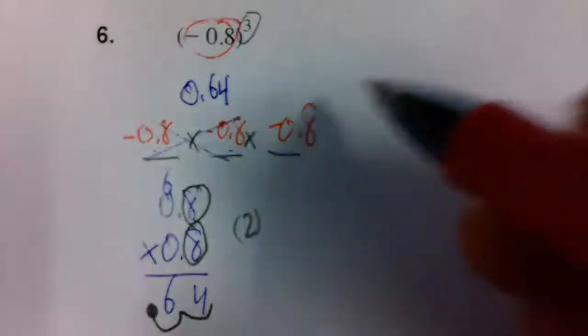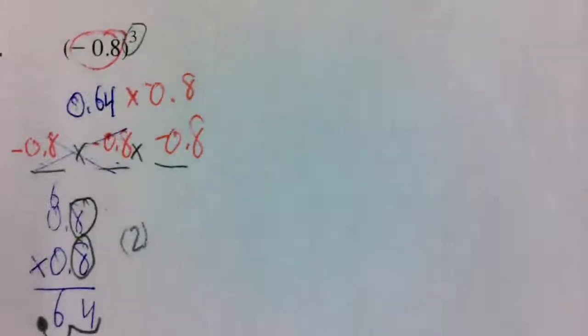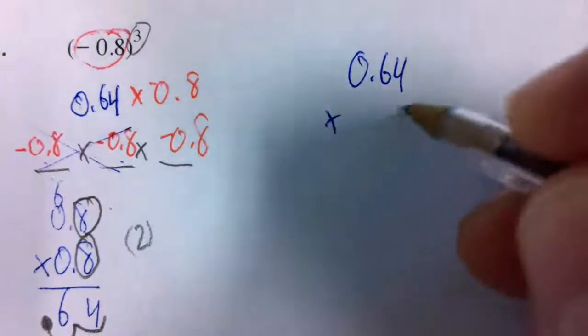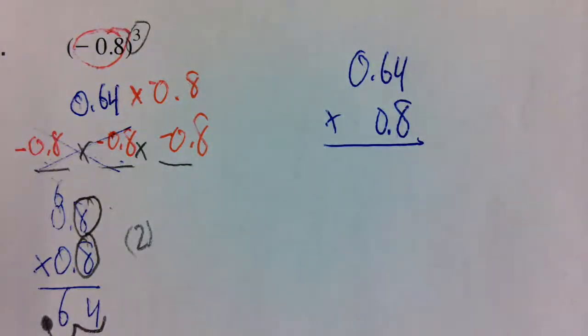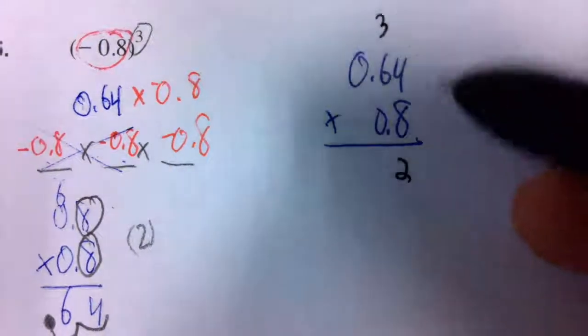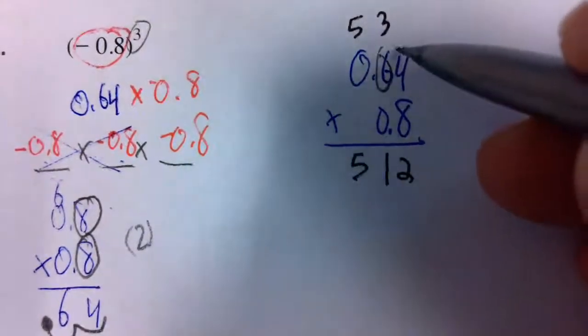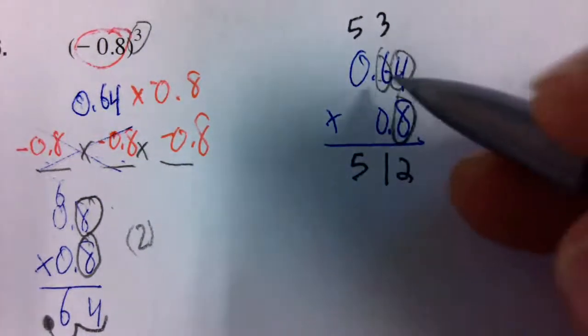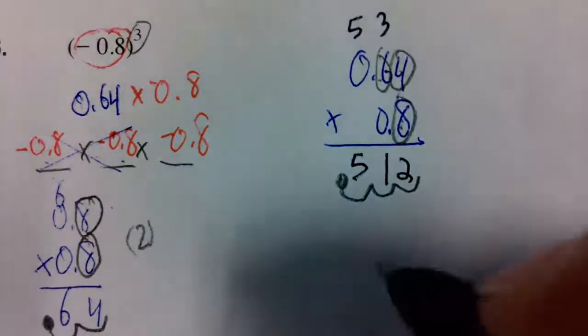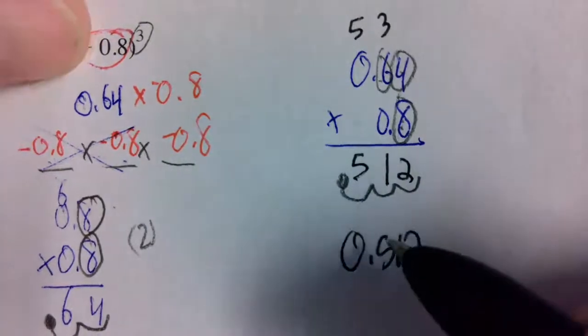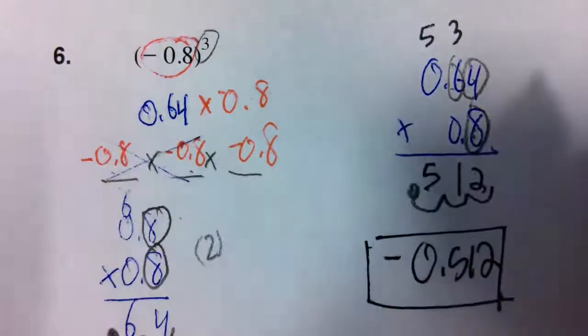Now you've got to take 0.64 times -0.8. Notice how the numbers line up. When we multiply these away, there are three numbers total after the decimal. Your answer needs to have three numbers after the decimal place. Before I box it up, I'm going to go back up here. Did they have the same sign? No, means we need a negative number.